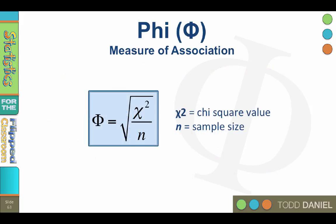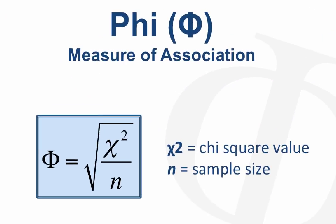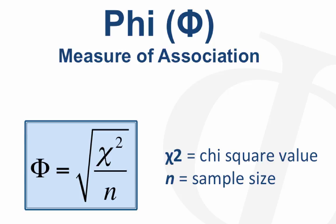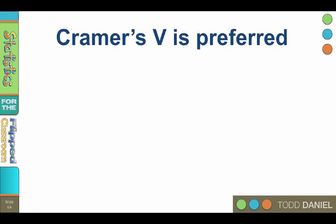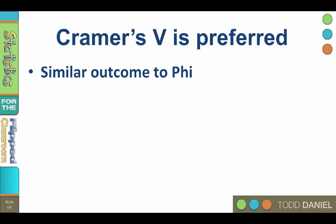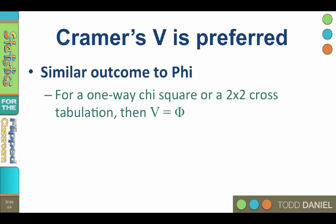The formula for phi is much more simple: it is the square root of chi-square divided by n. But we want to report Cramer's V because Cramer's V is the preferred measure of effect size for chi-square. The good news is that the output for Cramer's V is similar to phi, and in fact, when you use a one-way chi-square or a 2 by 2 cross-tabulation, Cramer's V will equal phi.